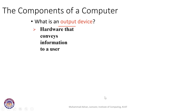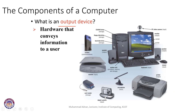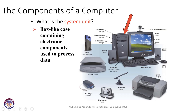Output devices are hardware devices that convey information to a user. The output devices are the computer monitor, the screen, the speakers, and the printer. A camera can also act as an output device when you are storing data onto an SD card or card reader. But mainly the printer, the monitor, and the speakers are the output devices.